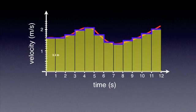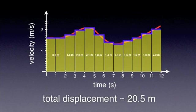During the next second, the average velocity is 1.8 meters per second and therefore the displacement is 1.8 meters. We can work out the displacements for the remaining one-second intervals. The results are shown on the screen. The total displacement is the sum of the areas of these rectangles and is approximately 20.5 meters.